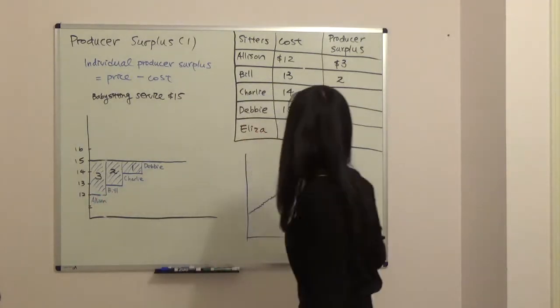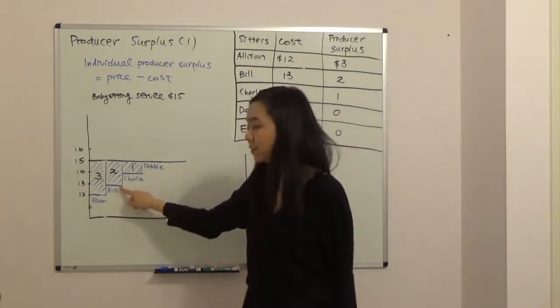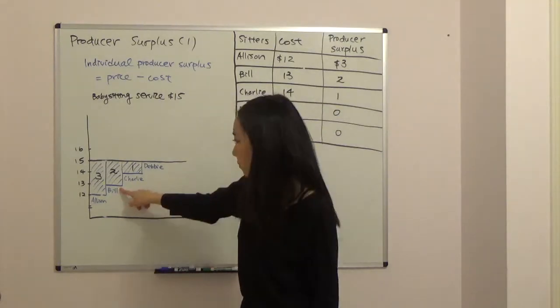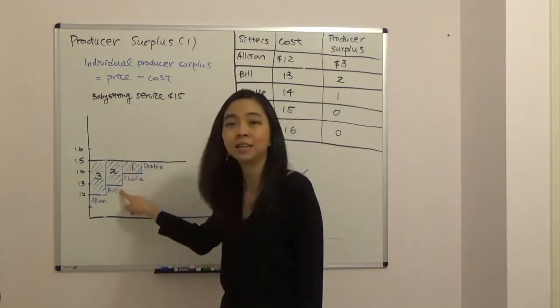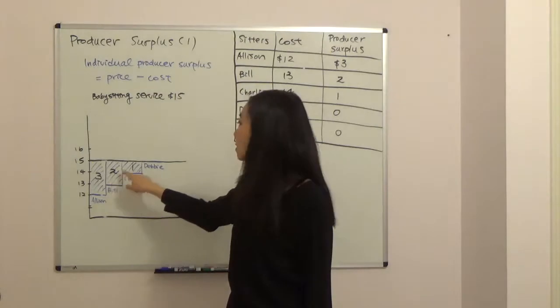How about Bill? Well, Bill's cost is $13, a little higher. So Bill's producer surplus will be $15 minus $13, that gives you $2. And so on and so forth.